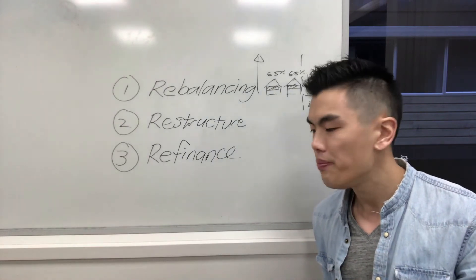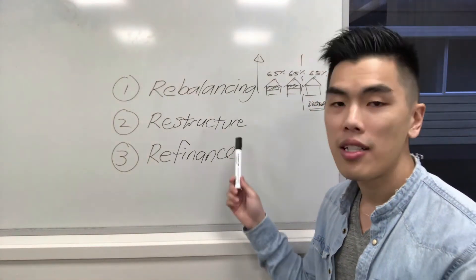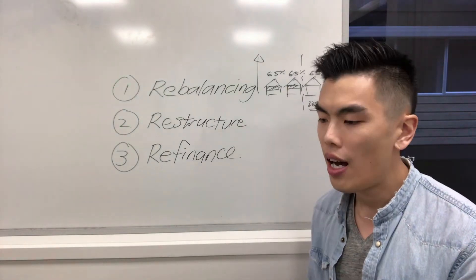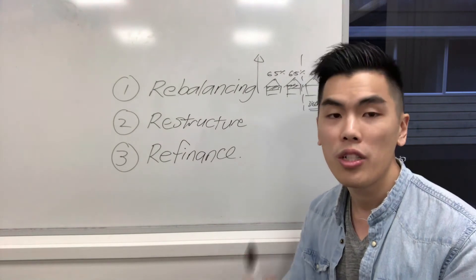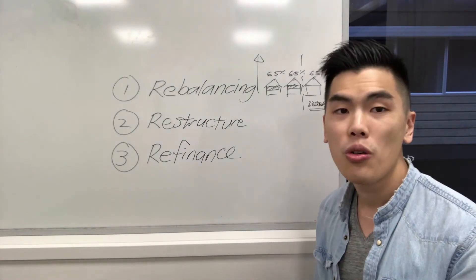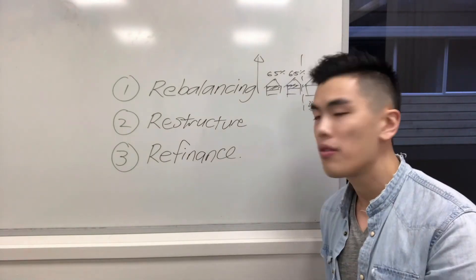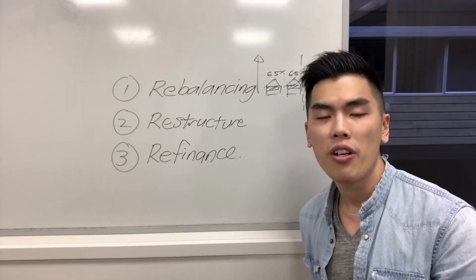These tricks are very simple. I would suggest you do them every two to three years when reviewing your mortgage with your mortgage advisor. If you're unsure whether you can do one of these three things, I would suggest you book a review with one of our senior advisors.